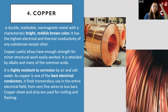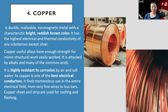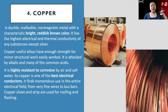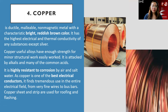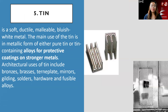Copper is another type of metal with high resistance to corrosion. It is most commonly used for electrical conductors — our wirings. Tin is used as alloys for protective coatings on stronger metals. Architectural uses of tin include bronze, brass, stern plates, mirrors, gilding, soldiers, hardware, and fusible alloys.